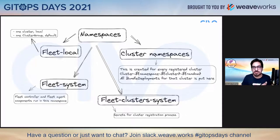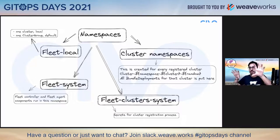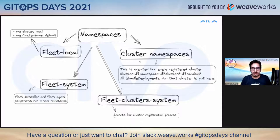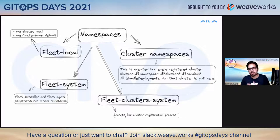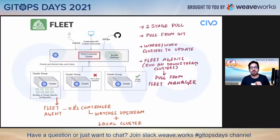Next comes the cluster namespace, which is created for every registered cluster. In a multi-cluster scenario, when you register another cluster to the fleet controller, a namespace gets created in the format: cluster, then the namespace, then the cluster name and a random string. All bundle deployments for that particular cluster are placed there. Then there's fleet-system, which is where the controller and fleet agents run on registered clusters. Finally, fleet-clusters namespace is for storing secrets for the cluster registration process.